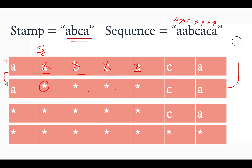We check whether this string matches the expected all-stars string — it still doesn't. So we continue. Starting from the ith index, we check for possible stamping. We have 'a' matching, then 'b', then an asterisk — which is a no-op because any value at this position will be overwritten in the last step. Continuing: asterisk again, no-op. Then we find another 'a' — the stamp string ends and we have an exact match.